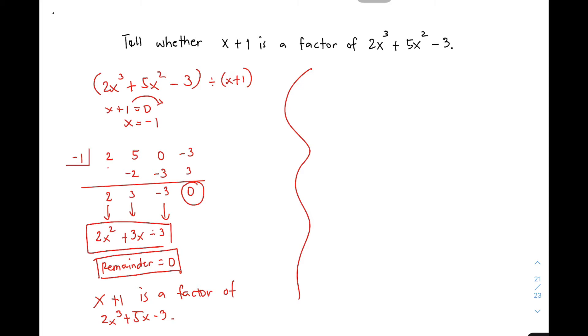So dito gawin tayo yung synthetic division. So let me use the remainder theorem. Pag ginamit natin yung remainder theorem, we will be having p of x is equal to 2x cubed plus 5x squared minus 3. At yung ating given, yung tin-test natin na ito, x plus 1 is equal to 0. So your x is equal to negative 1.